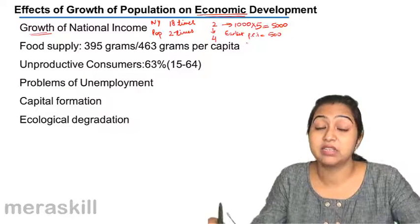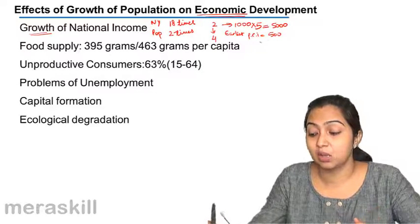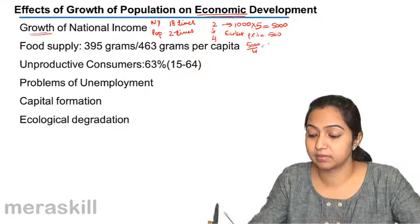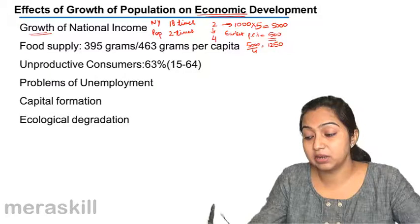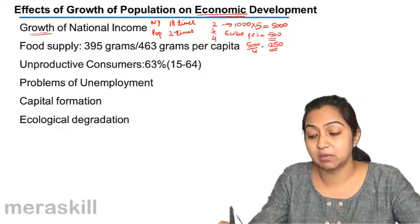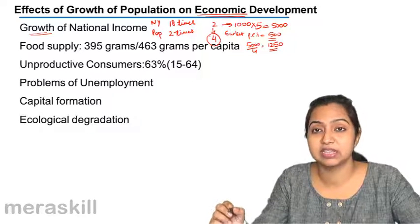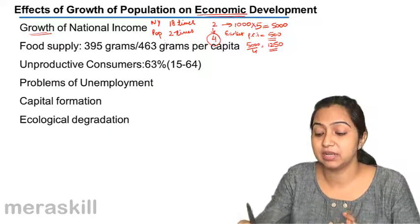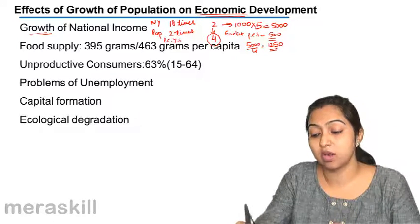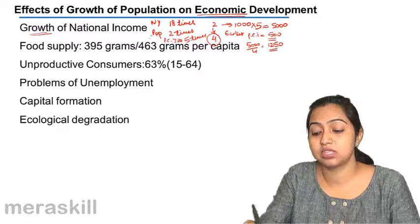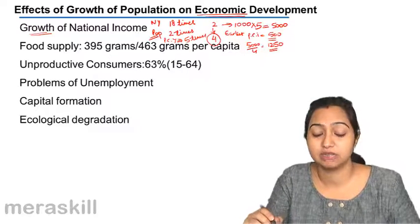Now when we see that income has increased by 5 times, has the per capita income also increased 5 times? No, it hasn't. Because the population had also increased at the same pace. So though the national income has increased 18 times, the per capita income has not increased that much — it has only increased by around 5 times — and this is because the population has grown at such a fast pace.